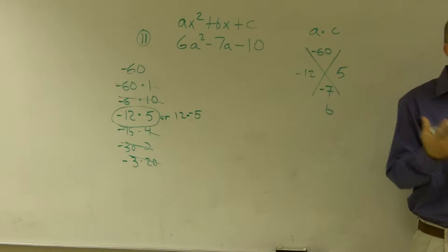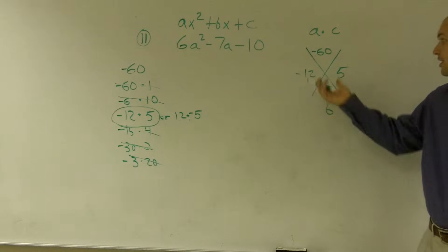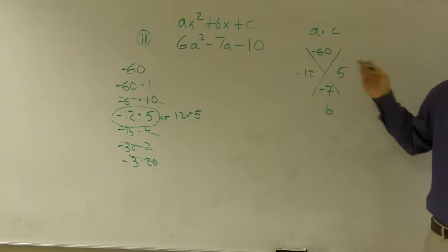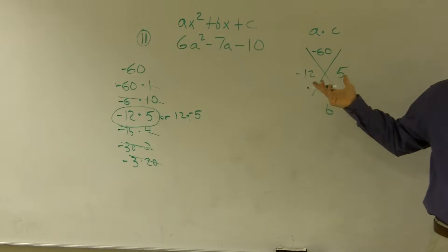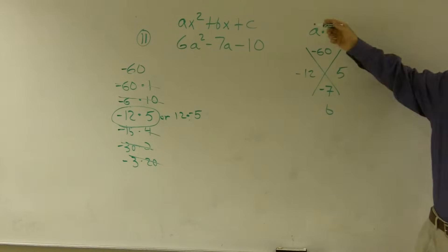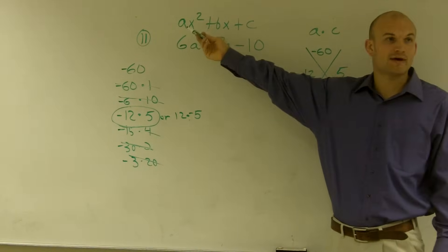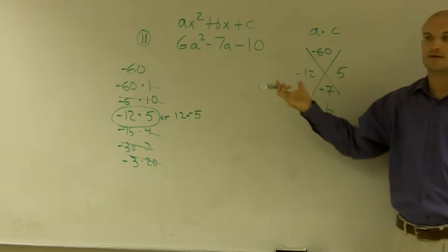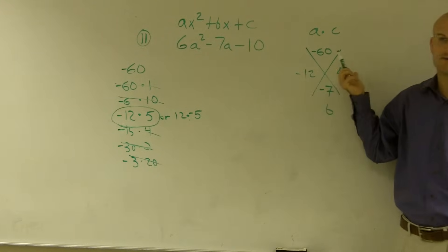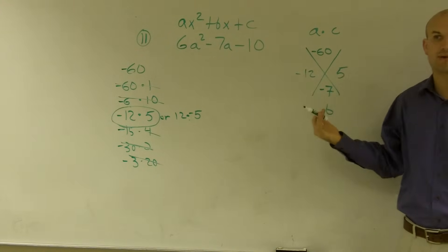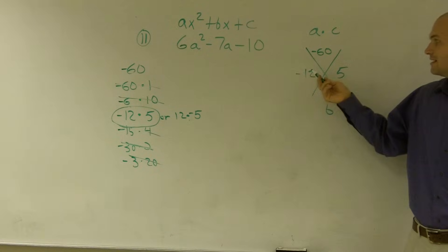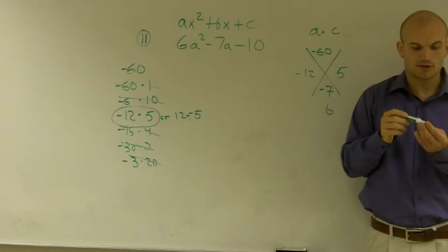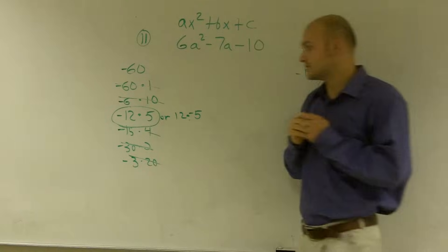Now, everybody is so used to saying, oh, these are your two answers: x minus 12 and x plus 5. That's where everybody gets mixed up. Before, when we solved when a was 1, that's what we did — we just took these two numbers and wrote x minus 12 and x plus 5. The problem is that x times x does not give you 6a squared.